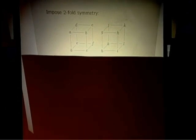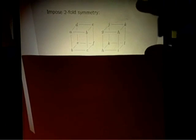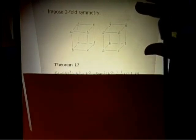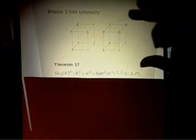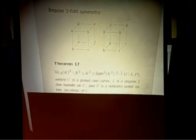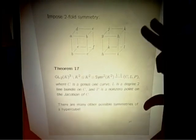One can do all sorts of other kinds of symmetry. There are various kinds of quadruple symmetry, and one can also impose two-fold symmetry — just symmetrizing two of the factors. So you replace K^2 tensor K^2 tensor K^2 tensor K^2 with two-by-two matrices of binary quadratic forms. The result is that w-symmetric hypercubes modulo GL2 cubed parametrize genus 1 curves, a degree two line bundle, and just a single point on the Jacobian instead of two points. That's very useful — you can decide how many marked points you want on your Jacobian.